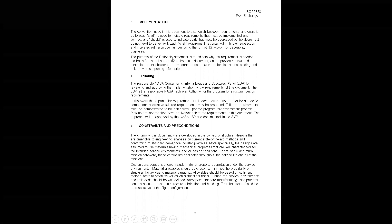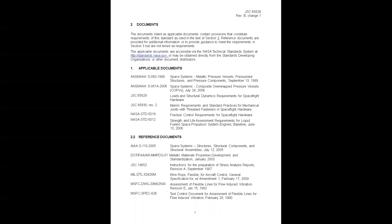The standard explains how to implement requirements, constraints, and preconditions. For example, design considerations should include material property degradation under service environments. Material allowables should be chosen to minimize the probability of structural failure due to material variability, and allowables should be based on sufficient material tests on a statistical basis. The document gives a list of applicable documents — S080A, S081A — along with fracture control standard 5019A and engine standard 5012B.